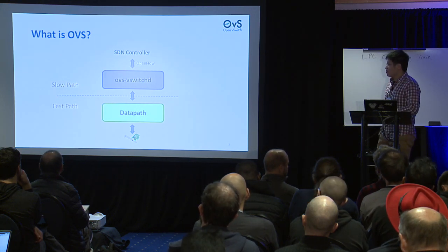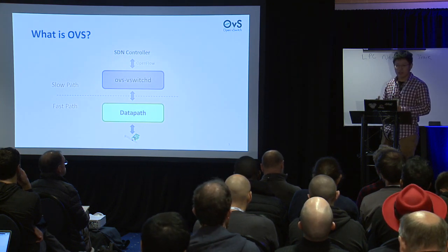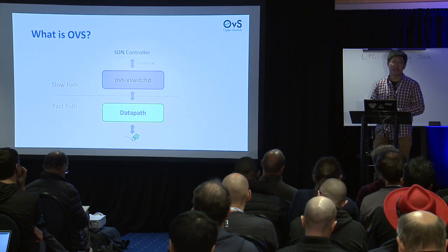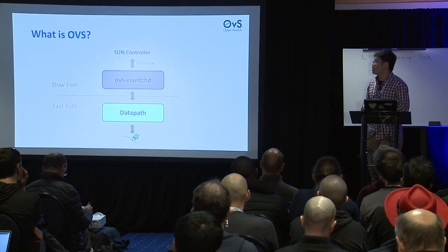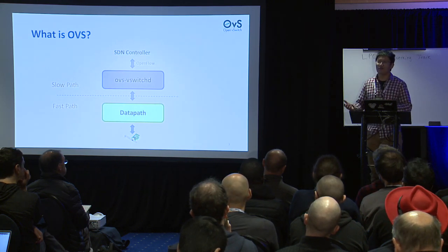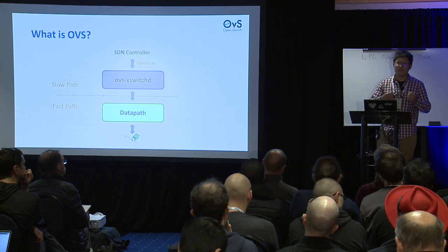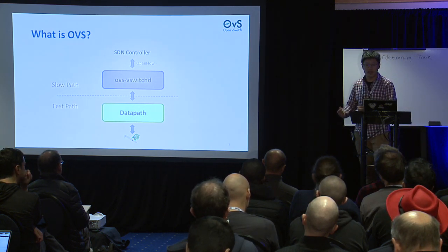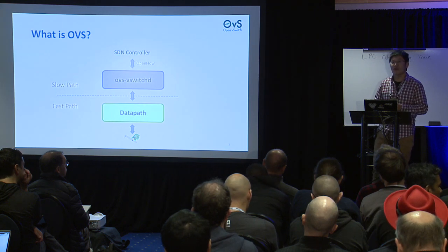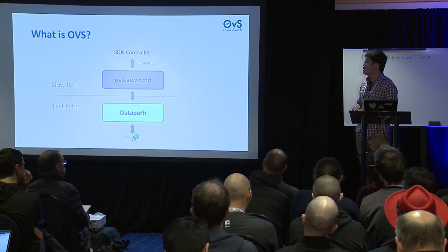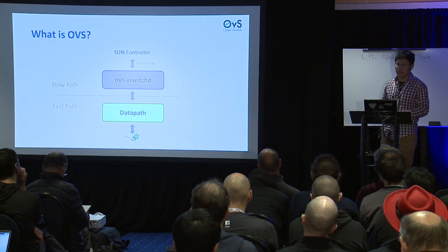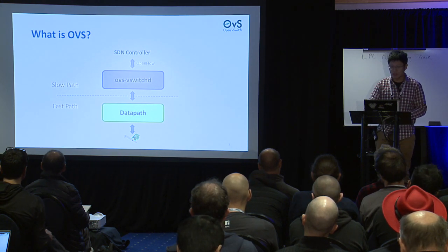Today OVS consists of two components: one is a slow path called OVS vSwitchD, and the other is a fast path called Datapath. When the first packet comes to OVS, it always goes to the slow path. The slow path handles more complicated stuff — OpenFlow has many tables, many different fields to match on the packet, and different types of actions. After the slow path finishes, it installs a single flow into the Datapath (fast path), so that subsequent packets hit the fast path and achieve much better performance.